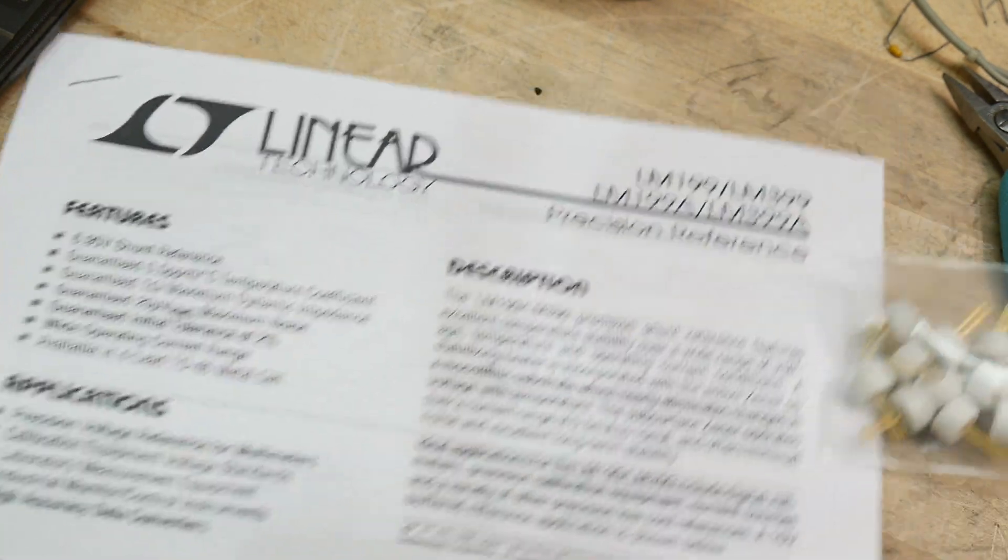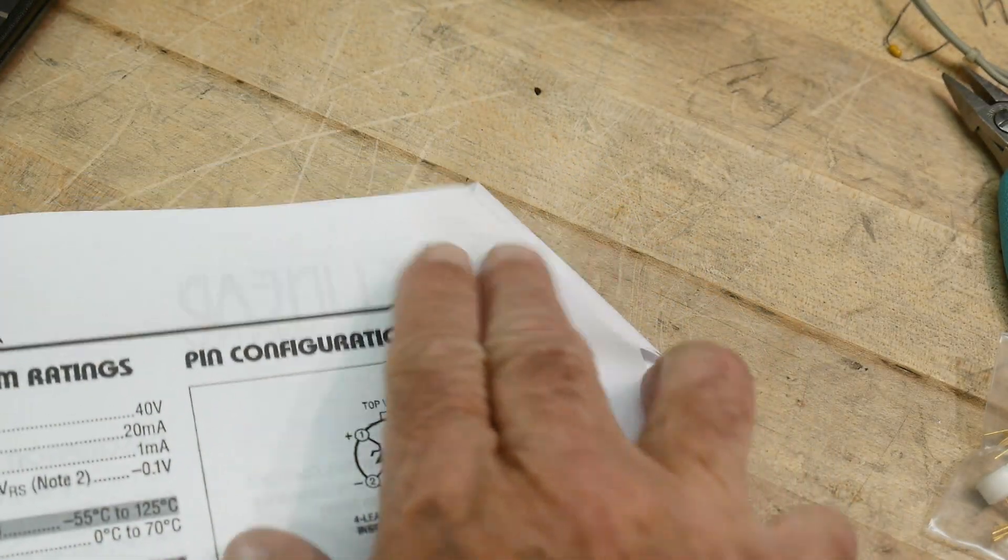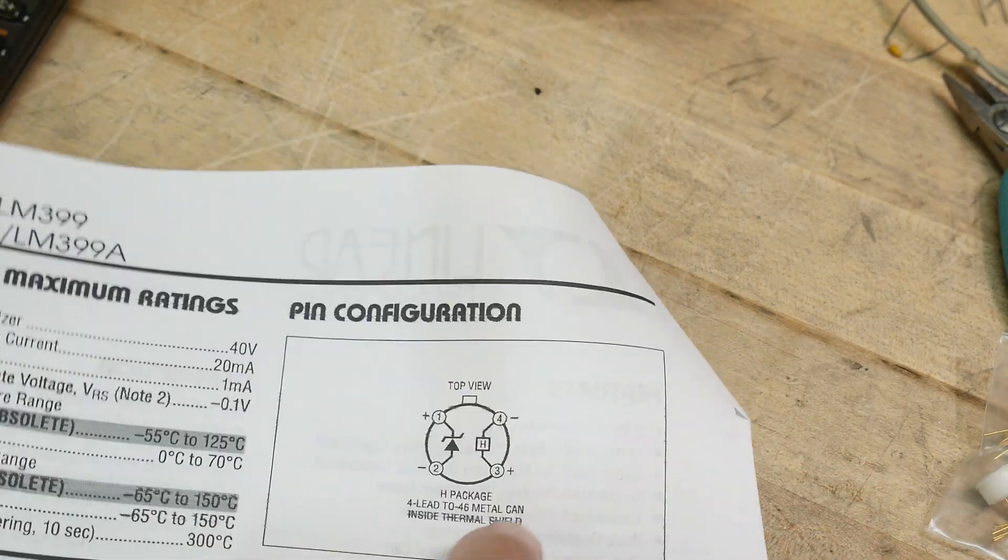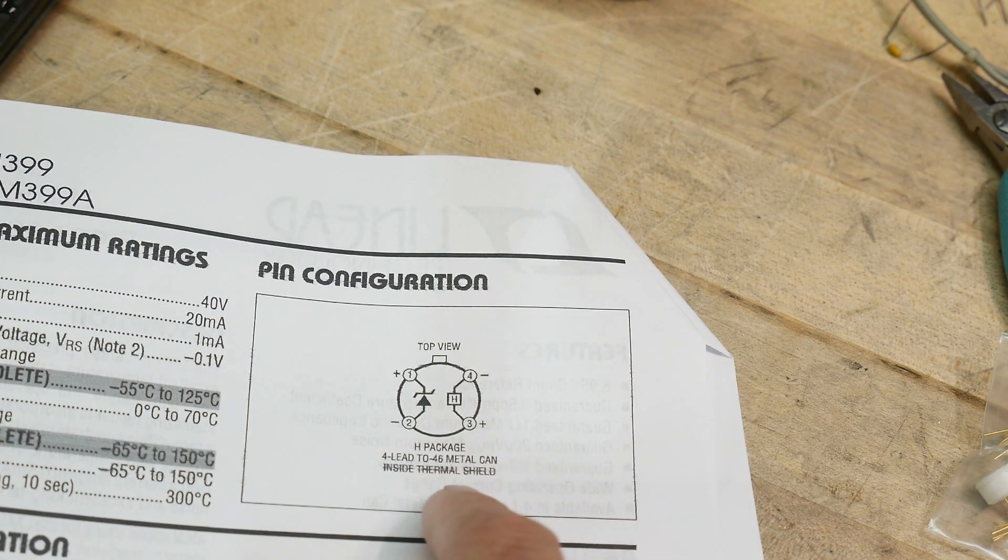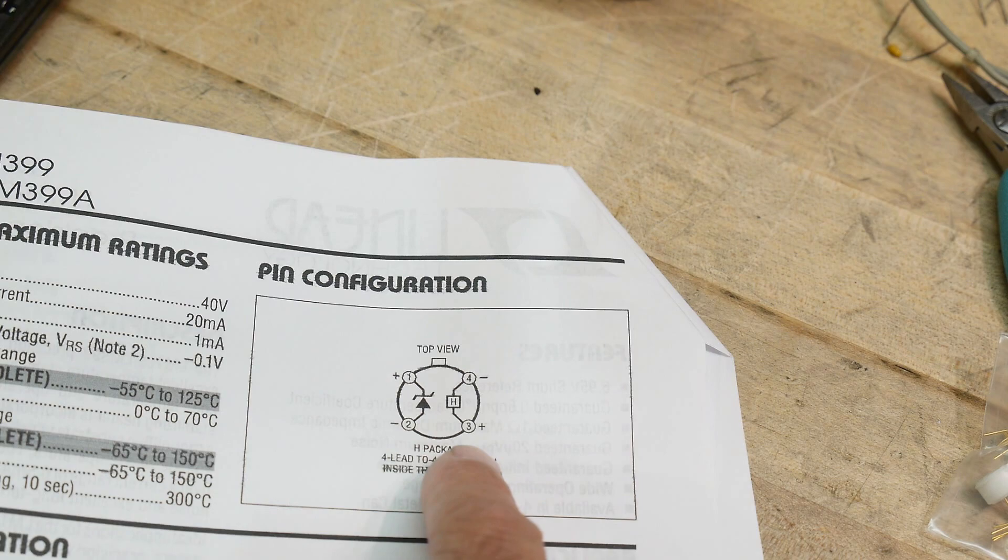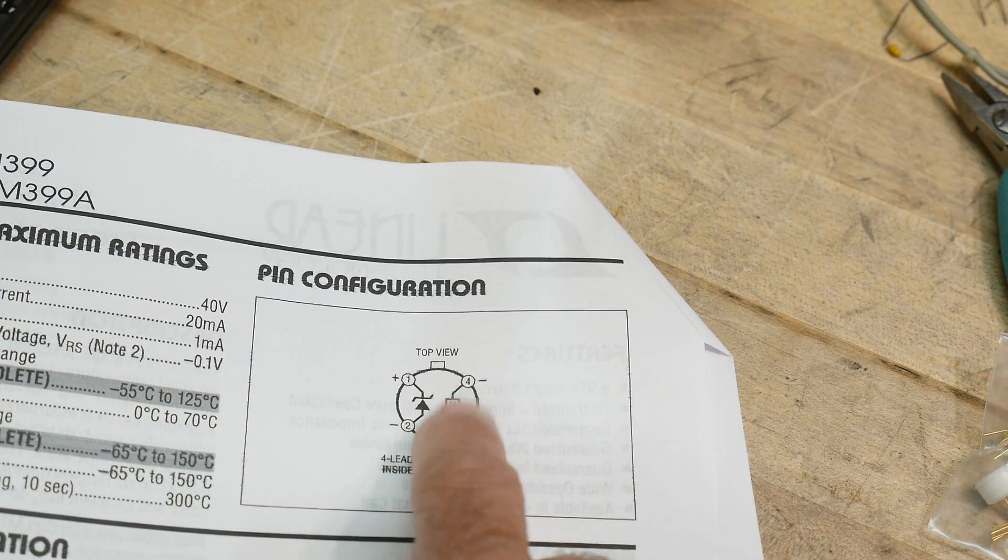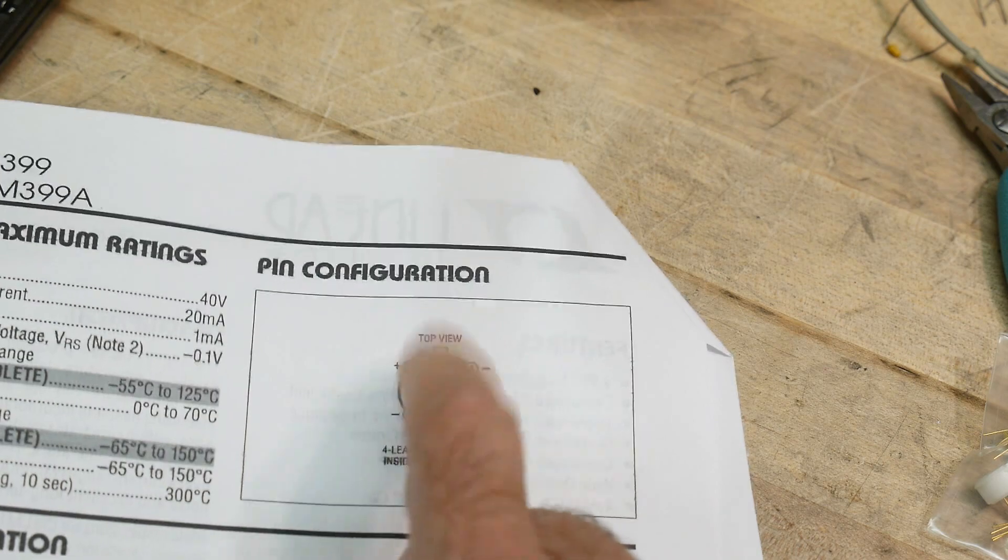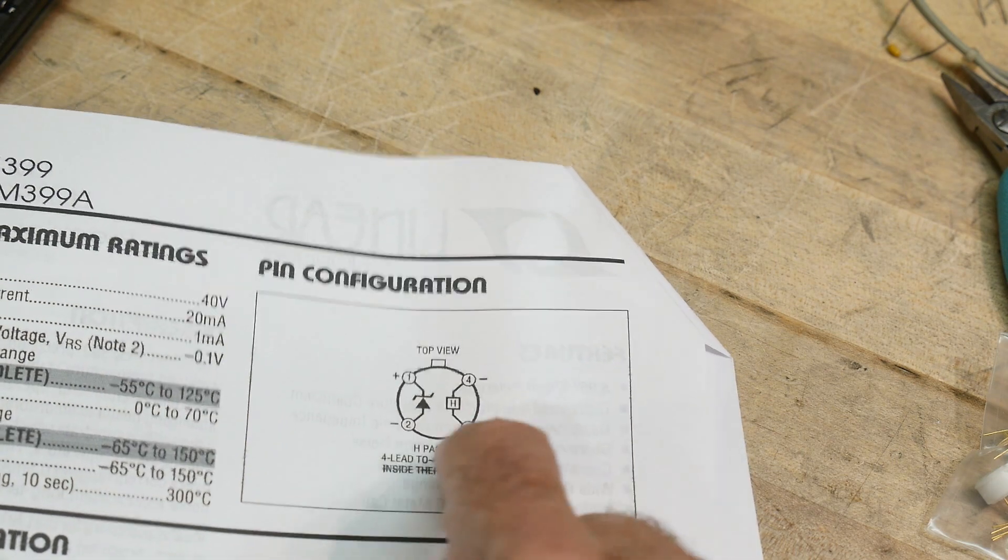The datasheet gives you a clue. It's basically a zener diode and a heating element. A lot of times the way you make things stable is you put crystals in ovens, keep them warm to keep them from being affected by ambient temperature. It has a heater element and a zener diode element. So I'm going to open one up and what we should see is a zener diode between these two pins and maybe a resistor or some heater element between those two pins.